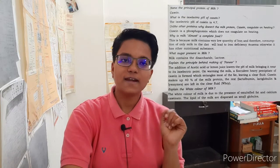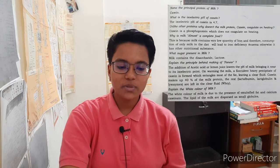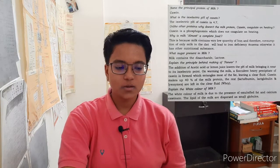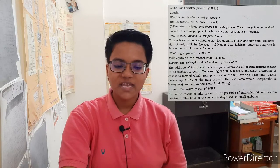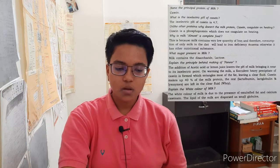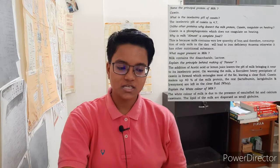Name the principal protein of milk. That is casein. What is the isoelectric pH of casein? The isoelectric pH of casein is 4.7. Unlike other proteins, why doesn't the milk protein casein coagulate on heating? Casein is a phosphoprotein which does not coagulate on heating. Why is milk almost a complete food? Milk contains very low quantity of iron, and therefore consumption of only milk will lead to iron deficiency anemia, otherwise it has other nutritional substances.